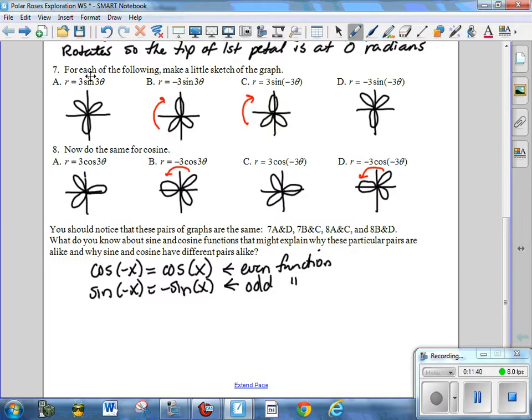And then, why is A equal to D? Well, you can think of D as negative 3 times negative sine of 3 theta. And the two negatives, a negative times a negative, then becomes a positive. And that's what you have in A. Now, you try to say negative 3 sine of negative 3 theta really fast. It's hard. It really is hard.